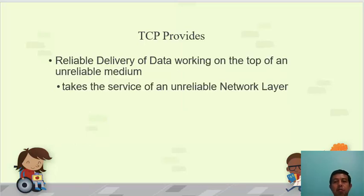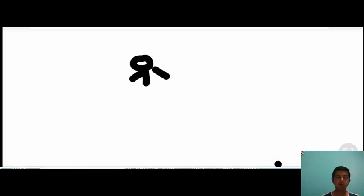Here comes the most important point: TCP provides a guarantee of reliable data delivery while working on top of an unreliable medium. TCP works over the network layer, which is an unreliable medium, yet TCP provides a reliability guarantee to the application layer. This is a fundamental challenge — providing reliability while working on an unreliable medium.